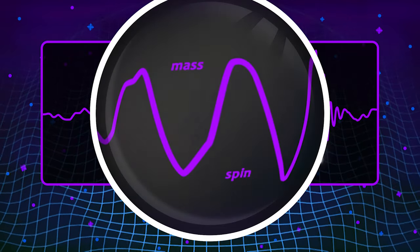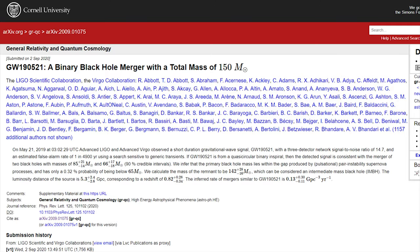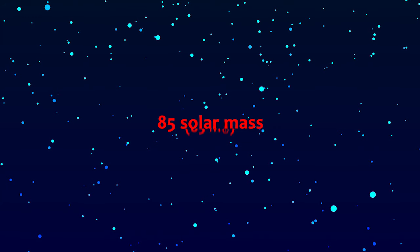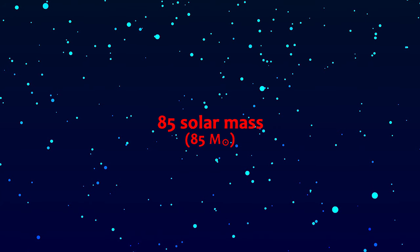One of the recent findings, described in this paper, brought a mixture of surprise and excitement. The source of the surprise is the mass of one of the black holes, which is around 85 times the mass of the Sun. What exactly is so surprising about this number?